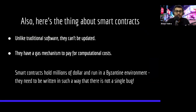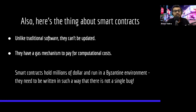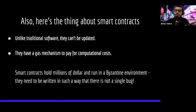The thing about smart contracts is that, unlike traditional software, they can't be updated, and you have a gas mechanism to pay for computational costs. If you're building a Web 2.0 application, people usually have the mentality to build fast and ship things — if there's an issue, they just update the software. But in smart contracts, you can't do that. That's sort of the value proposition of smart contracts: it runs in a decentralized manner, so you can't update smart contracts once they're deployed.